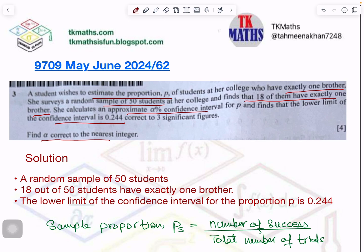So the question is in front of you. This question is about confidence interval in context of the proportion. A student wishes to estimate the proportion of students at her college who have exactly one brother.